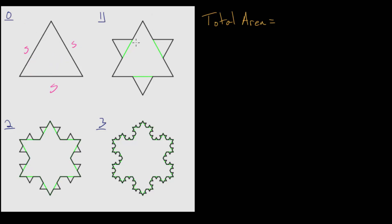And then in step 1 notice that we still have the space that the original triangle took up, but then we're adding three new triangles here. And we'll have to add the area of those three new equilateral triangles.